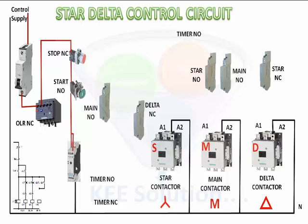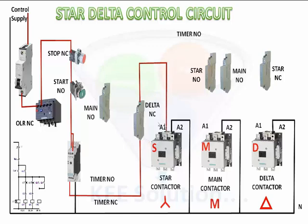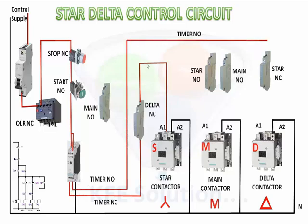We take timer NC, which goes to the delta NC auxiliary contact, and then connects to A1 coil side of the star contactor. Timer NO side connection will go to the star auxiliary contact NC and terminate at the delta contactor coil at A1 side.